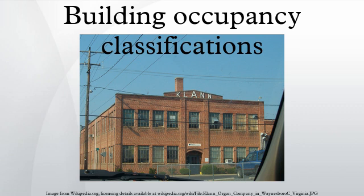In some jurisdictions, Group I may be used to designate industrial. Mercantile: places where goods are displayed and sold. Examples include grocery stores, department stores, and gas stations.